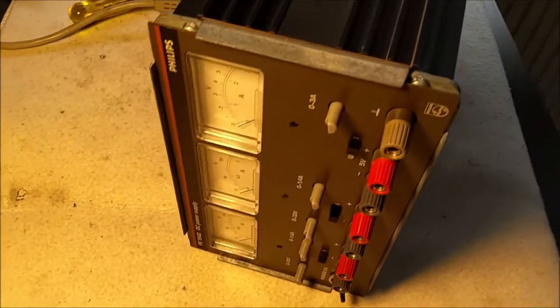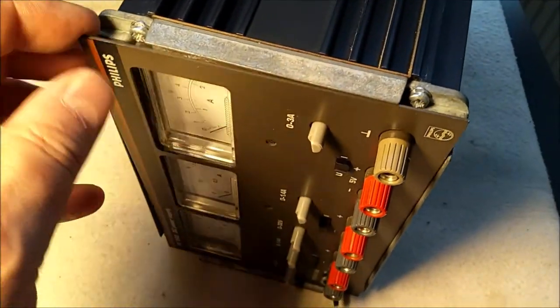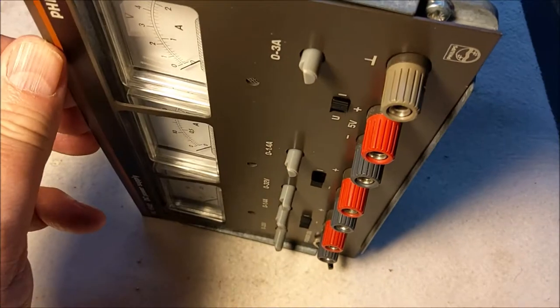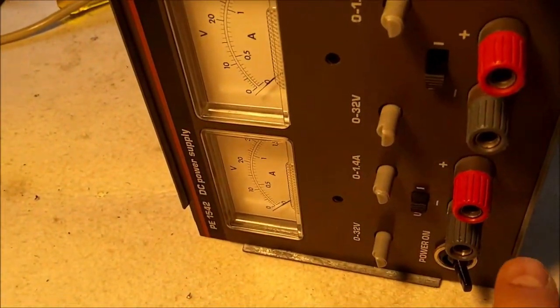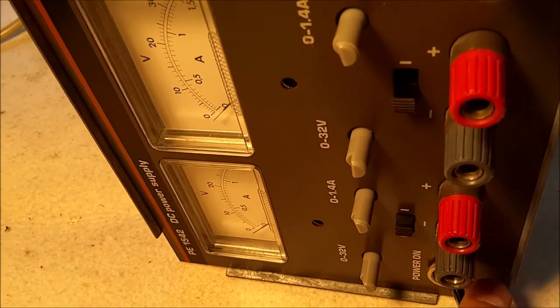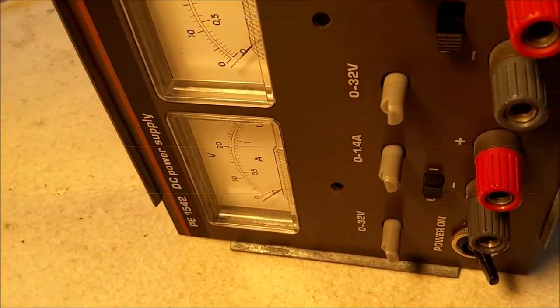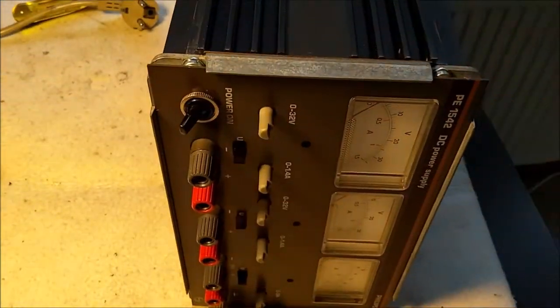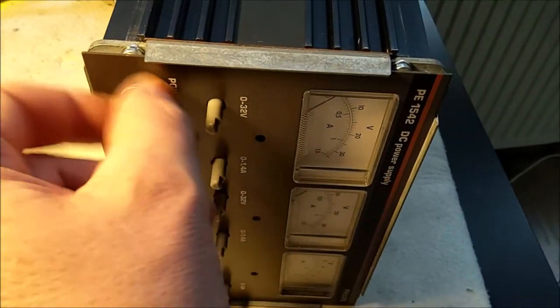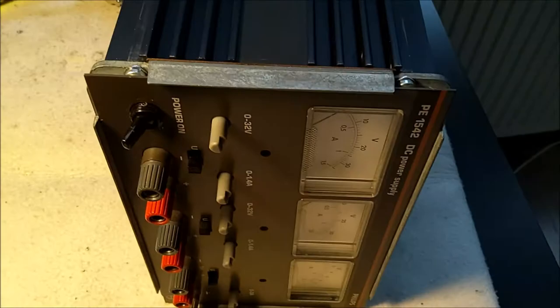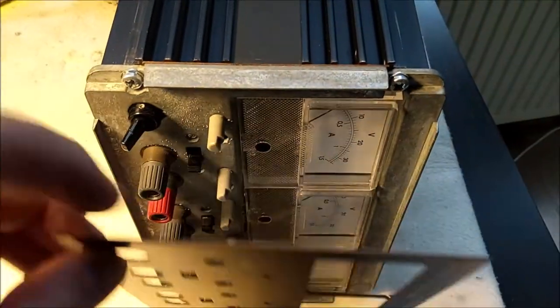Now with the knobs removed I should be able to get the front panel off. I'm not going to do that with the camera on because I don't want to break anything and it's good that I didn't do that because the ring here around the main switch is also holding the panel back. I got that loosened up so I can remove it now and let's see if we now can get the front panel off. Yes.